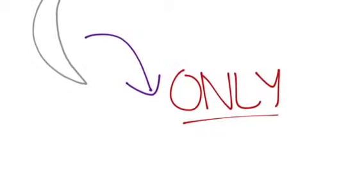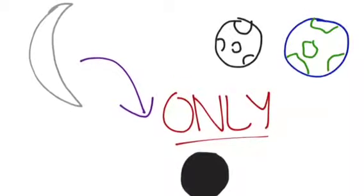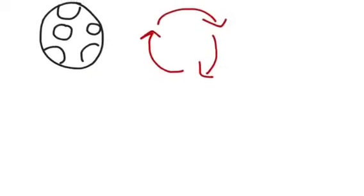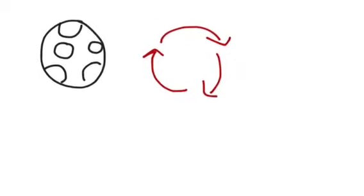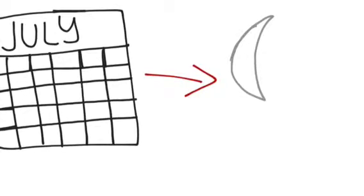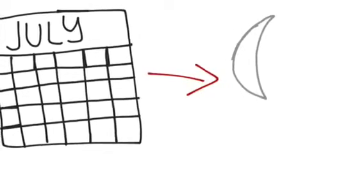A lunar eclipse can only occur during a full moon, and only if the moon passes through some portion of the Earth's shadow. Like most things, the moon has a cycle. Every month, the moon goes through a series of changes in its appearance from the Earth. The order of these are: